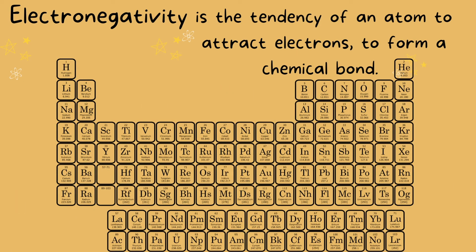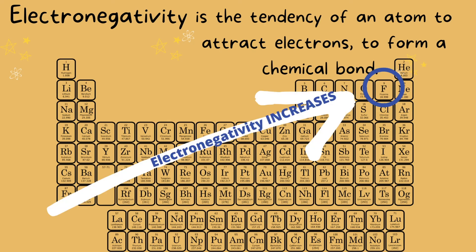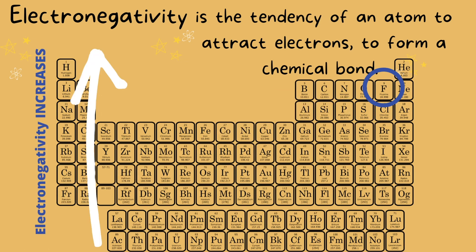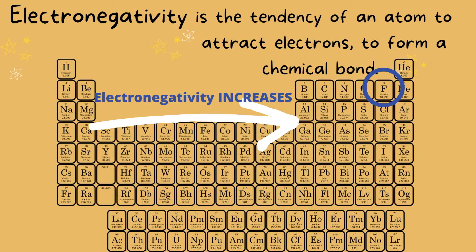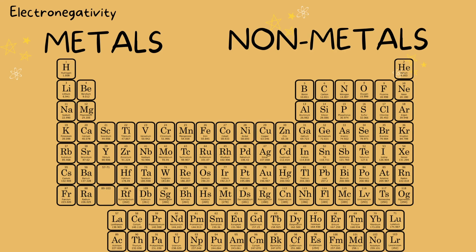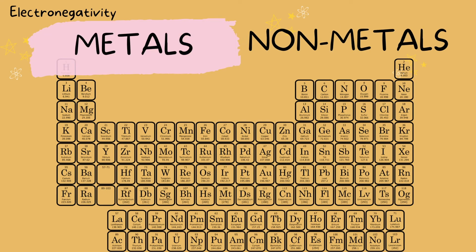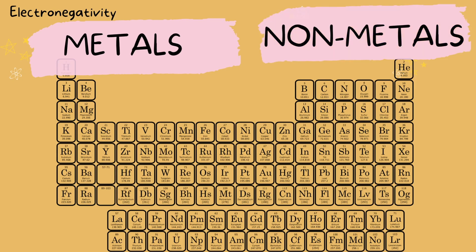This is what the electronegativity trend looks like on the periodic table. Fluorine is our most electronegative atom, so electronegativity increases going towards fluorine. It also increases going up and going from left to right on the periodic table. On the left side of the periodic table we have our metals, and to the right we generally have our non-metals.